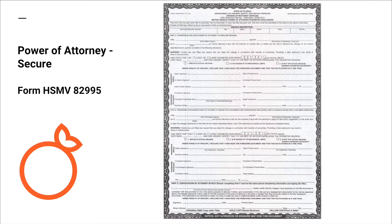Secured power of attorney A2995: this form is used when a title is not available due to a lien still existing on the title, or the title is held electronically or unavailable at the time of trade.